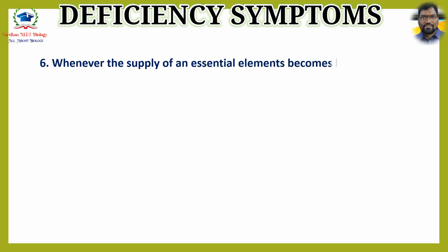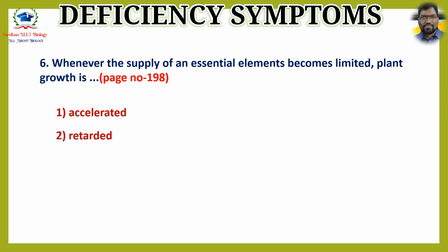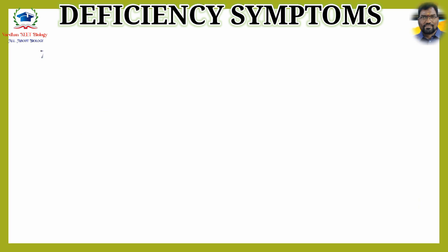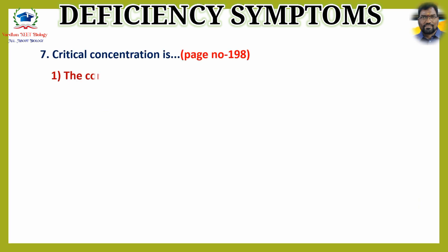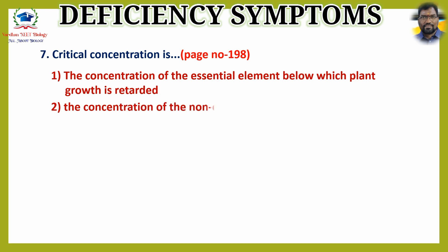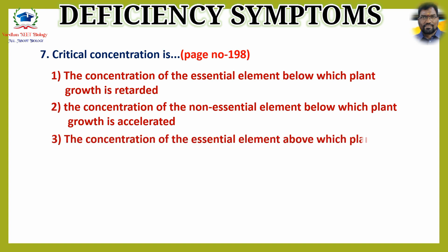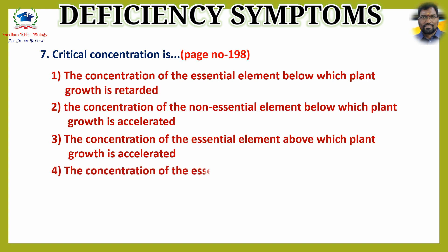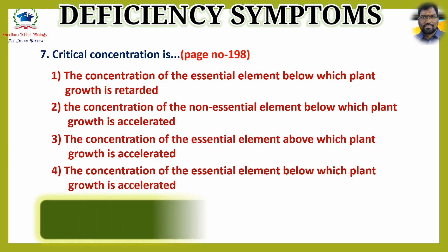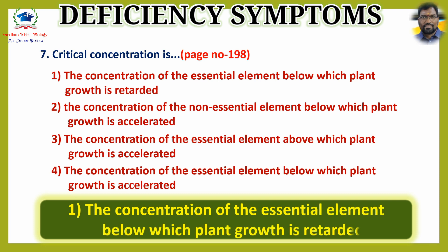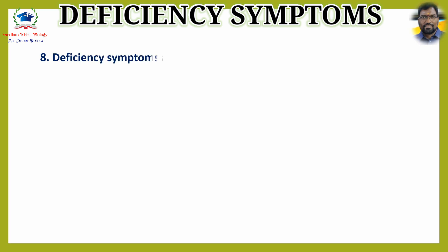Question 6: Whenever the supply of an essential element becomes limited, plant growth is — options are 1) accelerated, 2) retarded, 3) no effect, 4) optimum. The answer is option 2: retarded. Question 7: Critical concentration is — option 1: the concentration of the essential element below which plant growth is retarded. The answer is option 1.